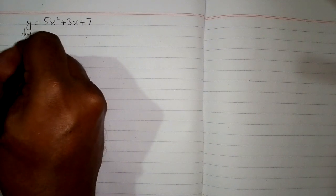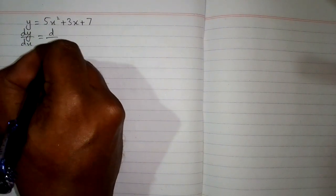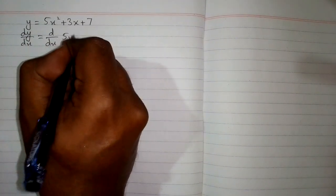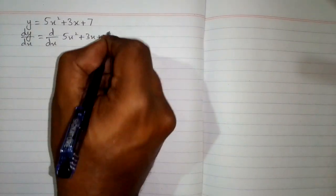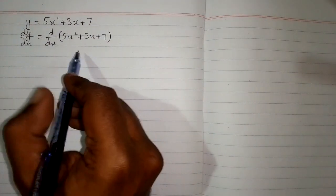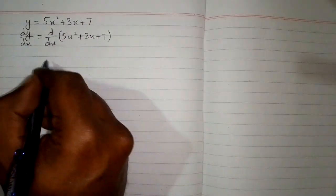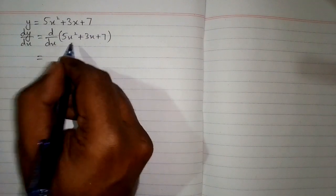In this video we will find the derivative of the function y equals 5x squared plus 3x plus 7. First we will take the derivative of both sides, so we have dy/dx is equal to d/dx of 5x squared plus 3x plus 7. This expression has three terms, so we will apply the derivative on each term.